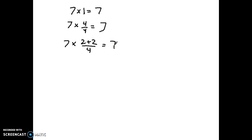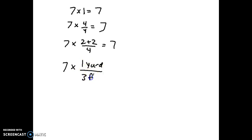For example, seven times one yard over three feet — that is still seven, because you have multiplied it by something where the numerator and denominator are equivalent. That's the idea of what we're going to be doing today.